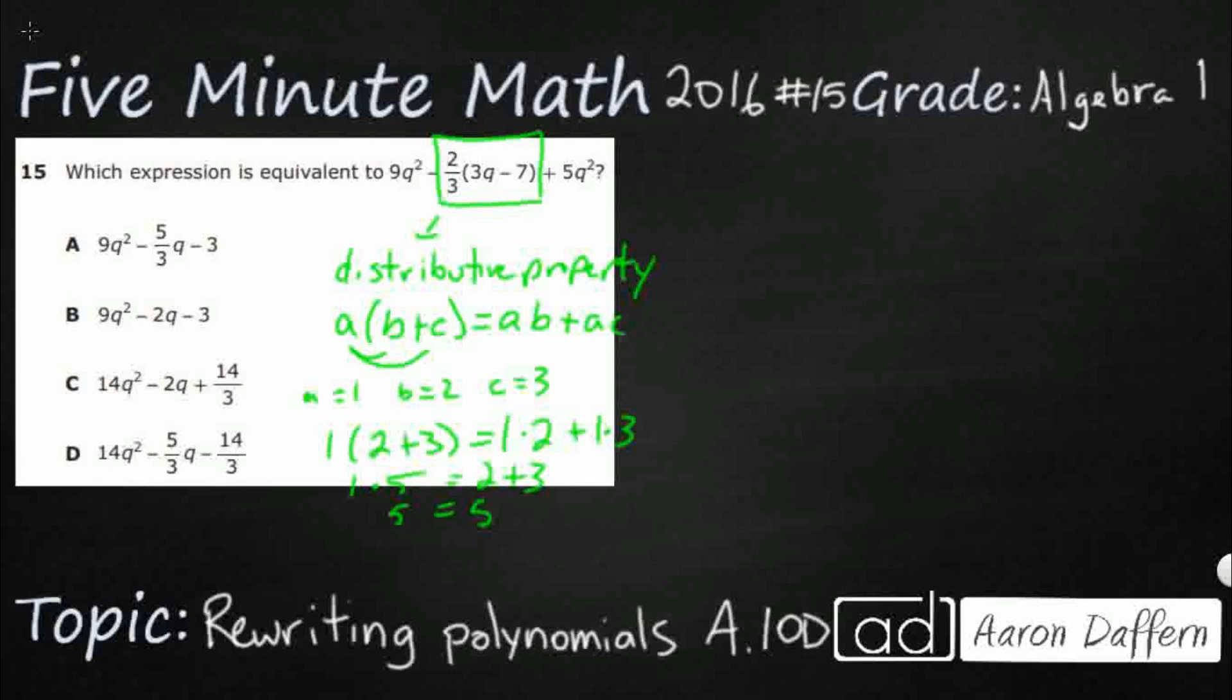So let's take our 9Q squared. And we need to multiply this 2 thirds by the 3Q and we need to multiply it by that negative 7. Now, it is a minus 2 thirds. So we need to keep that in mind. So we're going to have a minus 2 thirds and we're going to multiply this by the 3Q. And we're going to have a minus 2 thirds and we're going to multiply it by the negative 7. So those two are going to end up becoming a positive. And then you've got your 5Q squared.